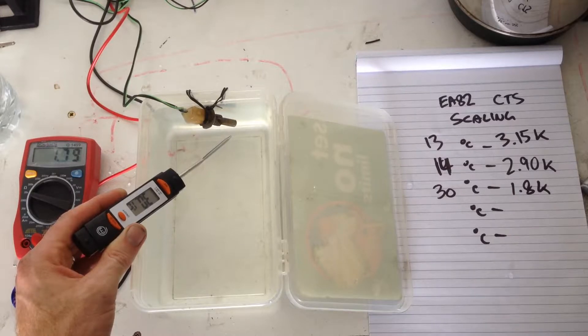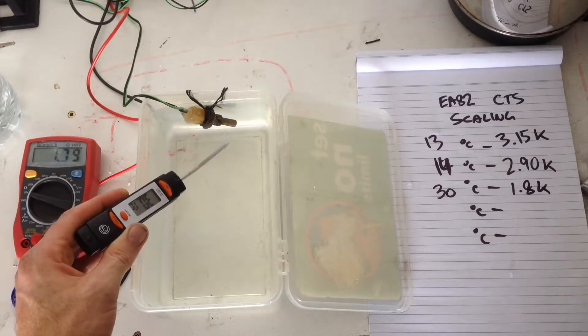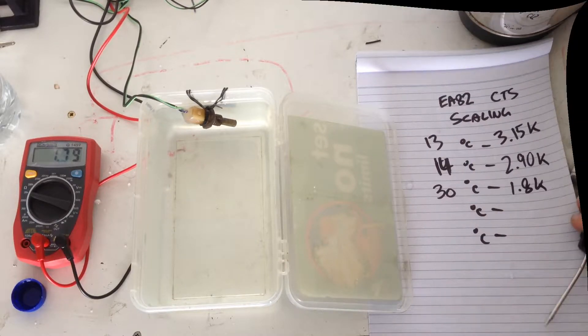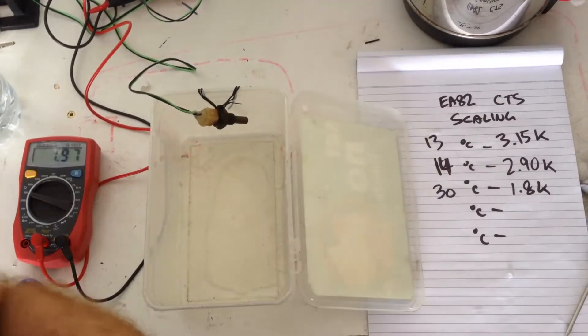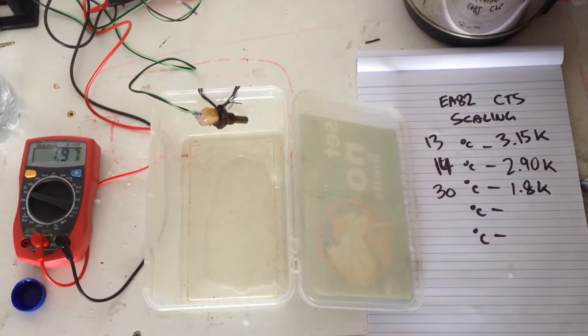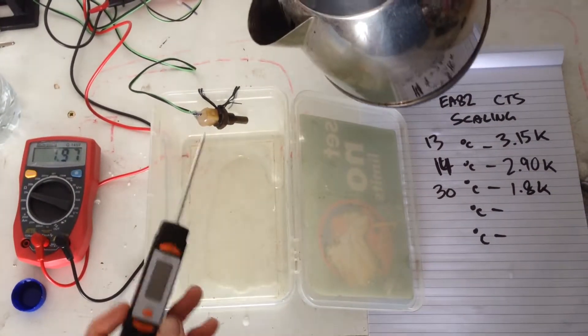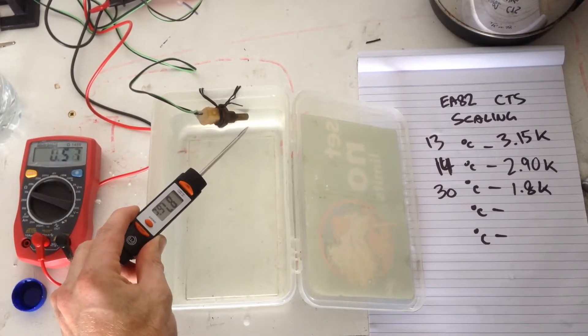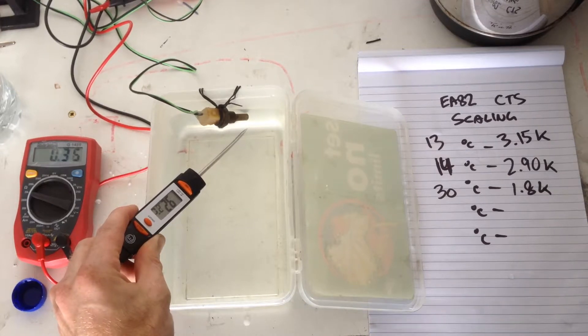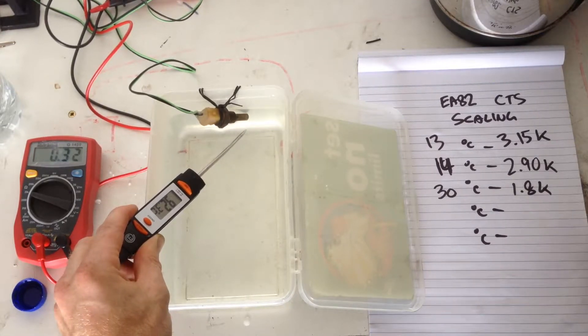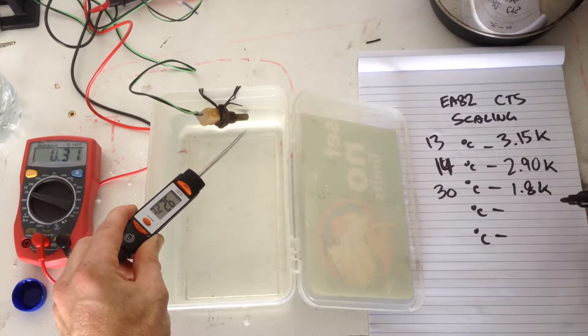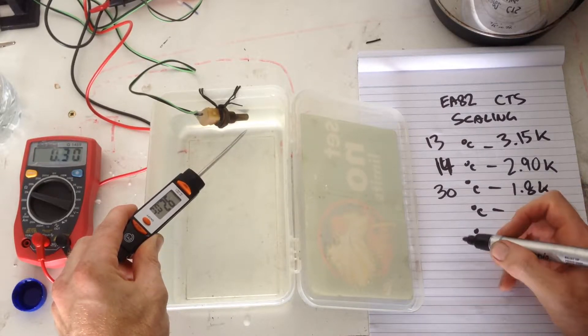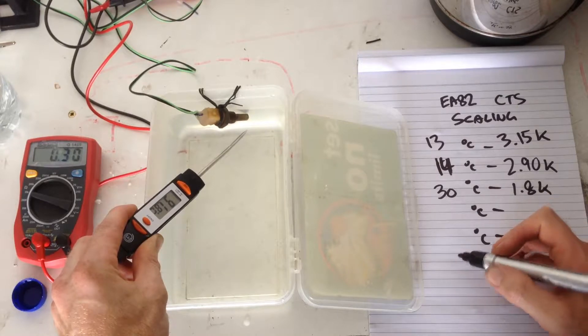Alright, I'm going to have to get this water out now and put some hot water in. Alright, so now I'm going to add some boiling water for the top end of the scale. Okay, so it looks like we're going to get 92 is the hottest we're going to get. 92 degrees is 0.3.